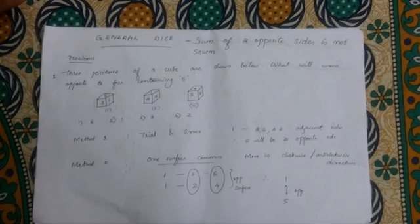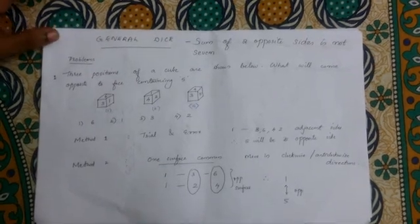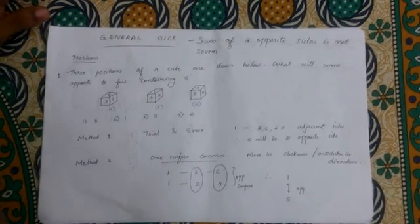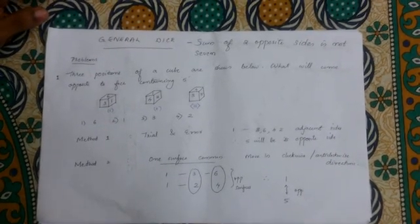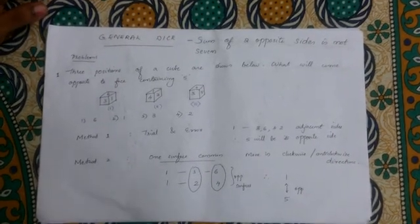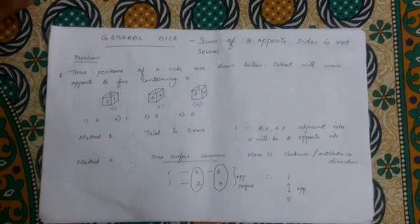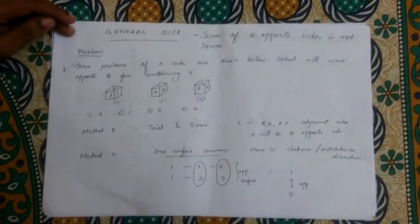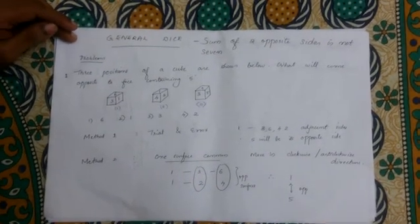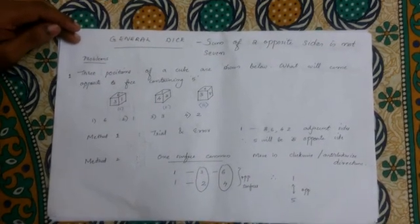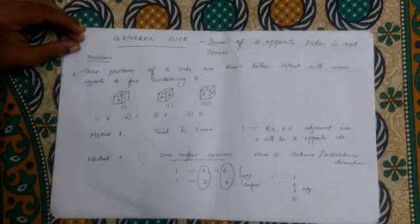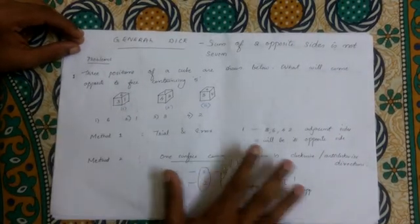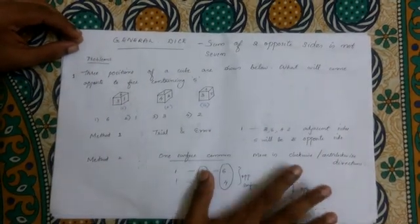Now, General Dice. In a General Dice, the sum of opposite sides is not 7. That is the defining difference. A Standard Dice falls into a separate category from General Dice.